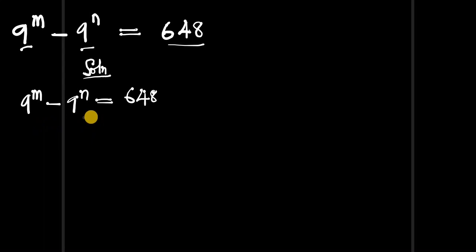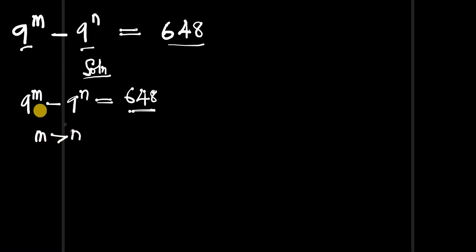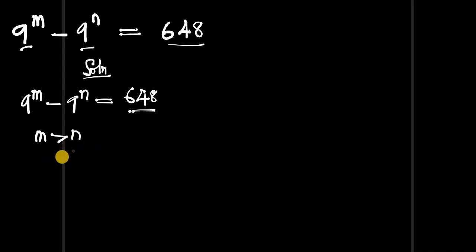By looking at this equation, you will agree with me that 648 is a positive integer, meaning that m is greater than n. That means 9 to the power of m is actually greater than 9 to the power of n — that's why we have a positive integer here.